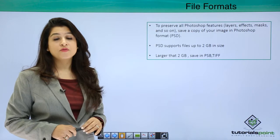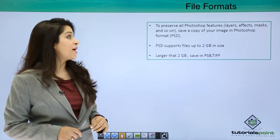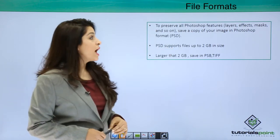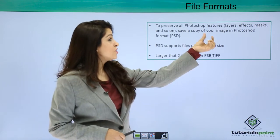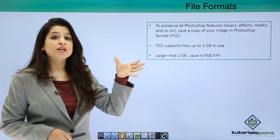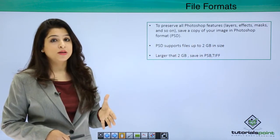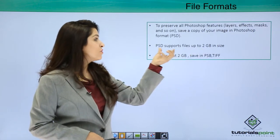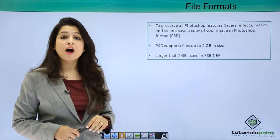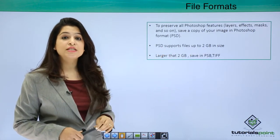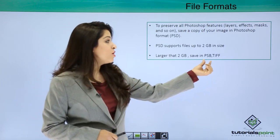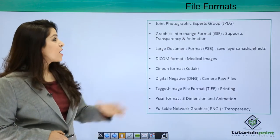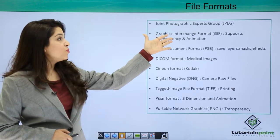Basically, Photoshop's default file format is PSD, the Photoshop file format. If you save a file in PSD, you'll have the layers, effects, mask, and everything in that copy. Photoshop allows up to 2 GB size for a PSD file. If it's higher than that, you can save the image in PSB or TIFF.